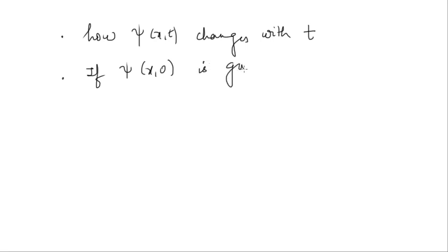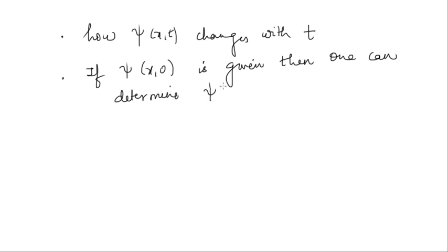If the initial condition ψ(x, 0) is given, then one can determine ψ(x,t) from this equation. In the next lecture we will try to see the solution of this equation and then try to understand it. Thank you.